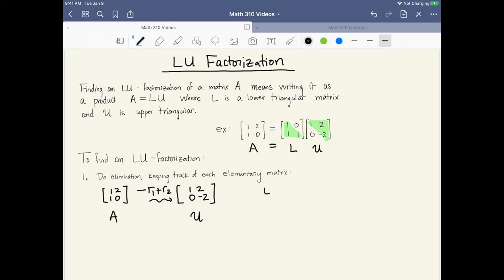And the row operation that I performed, minus row 1 plus row 2, is encoded by a specific elementary matrix. That specific elementary matrix has [1, 0] in the first row because nothing happened to the first row, and then [-1, 1] in the second row which encodes the linear combination that I used to perform this row operation. Now that I have an upper triangular matrix I stop and step 1 is done.